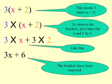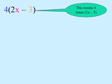So our solution would be 3 bracket x plus 2, close bracket, equals 3x plus 6.